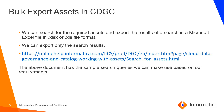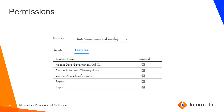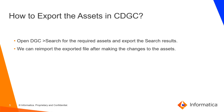For bulk export assets in CDGC, we can search for the required assets in Data Governance and Catalog and export the search results in a Microsoft Excel file format. We can export only the search results. You can refer to the above document which has sample search queries that you can use when searching assets in CDGC. The user role must have export and import permissions under the Data Governance and Catalog service.